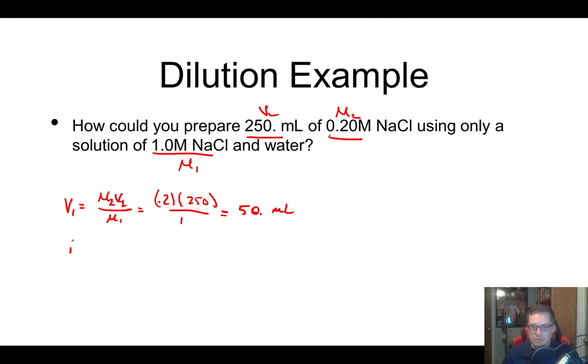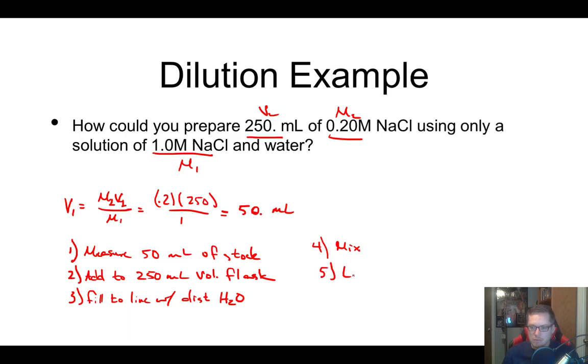So step one would be measure 50 milliliters of stock. And then you got to decide what size volumetric flask you need. We are making 250 milliliters, so you add this to 250 milliliters volumetric flask. Fill to line with distilled water, mix and then label. We would label it as our new concentration, which would be 0.20 molar, and then our solute was NaCl. And that's it.